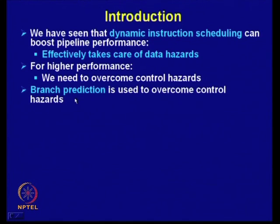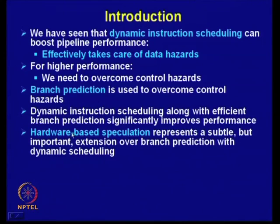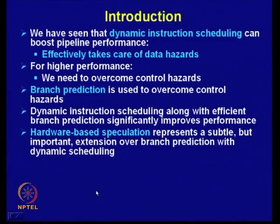We introduced the concept of branch prediction to overcome control hazards, and by using sophisticated branch prediction techniques, we have seen how performance can be improved. In the last lecture, we discussed dynamic instruction scheduling along with efficient branch prediction. Hardware-based speculation represents a subtle but very important extension of hardware-based instruction scheduling with branch prediction — it is an extension of the technique discussed in the last lecture.